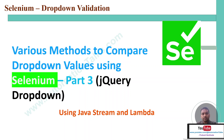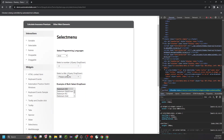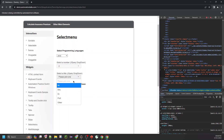Hello everyone, welcome back to Automation Talks. This is the third video, a continuation of my previous videos one and two where I spoke about various methods to compare dropdown values. In this part three, I'm going to talk about jQuery dropdowns. The last couple of videos we spoke about a simple standard HTML select dropdown. The URL remains the same — dropdown number two and dropdown number three are jQuery dropdowns.